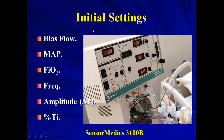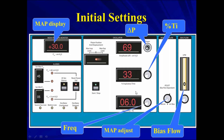To repeat the settings: the bias flow, the mean airway pressure, the FiO2, the frequency, the amplitude or delta pressure or power, and the percentage of the inspiratory time. We are talking about the SensorMedix 3100P. The mean airway pressure can be decided from this knob, along with the bias flow, the delta pressure or power, the inspiratory time, and the frequency.